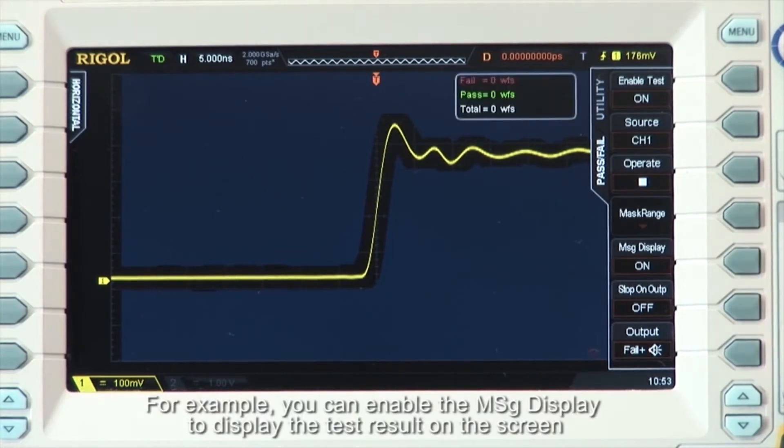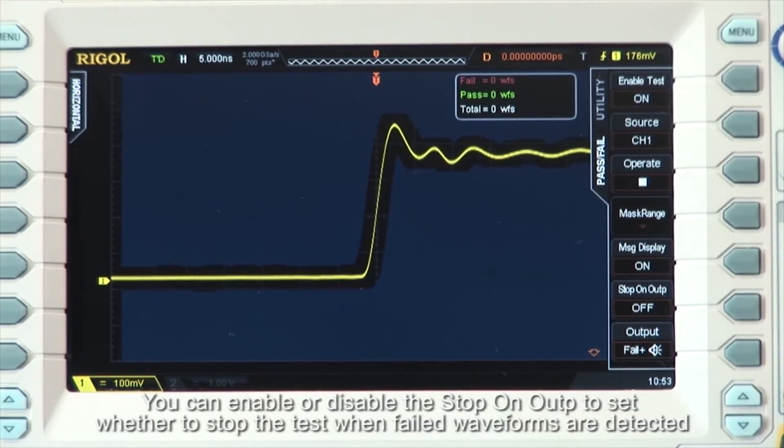For example, you can enable the message display to show the full test results on the screen. You can enable or disable the stop on output to set whether to stop the test when failed waveforms are detected.